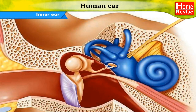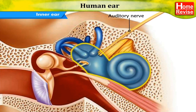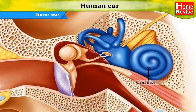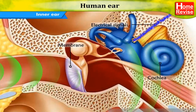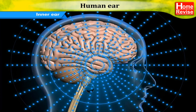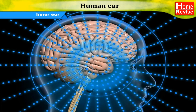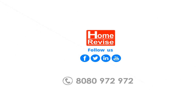The auditory nerve connects the inner ear to the brain. The inner ear has a structure resembling the shell of a snail, called the cochlea. The cochlea receives the vibrations coming from the membrane and converts them into electrical signals which are sent to the brain through the nerve. The brain analyzes these signals.